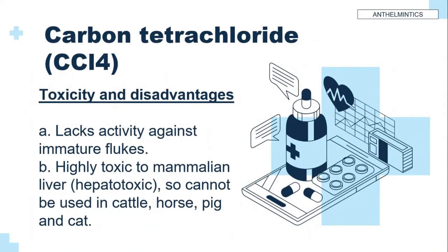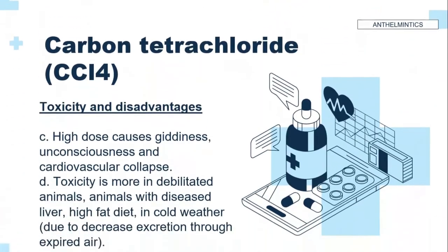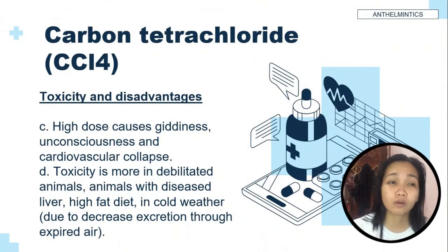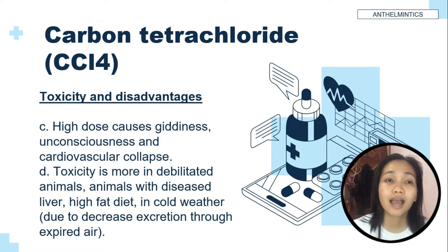Toxicity and disadvantages of carbon tetrachloride: A — it lacks activity against immature flukes. B — it is highly toxic to the mammalian liver, so cannot be used in cattle, horse, pig, and cat. C — high doses cause giddiness, unconsciousness, and cardiovascular collapse. D — toxicity is greater in debilitated animals, animals with disease or fever, on a high fat diet, or in cold weather, due to decreased excretion through expired air.